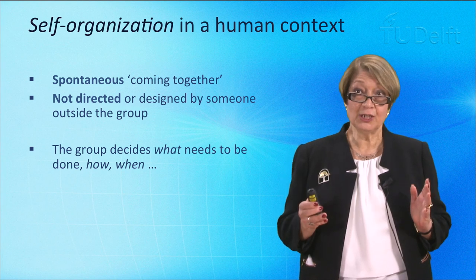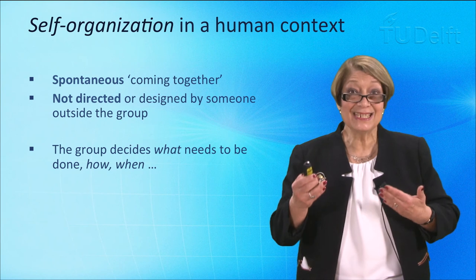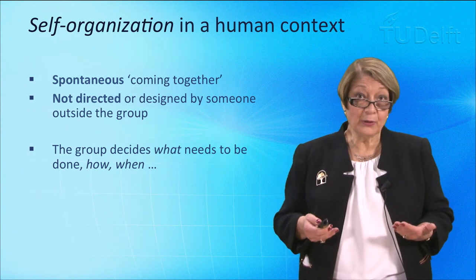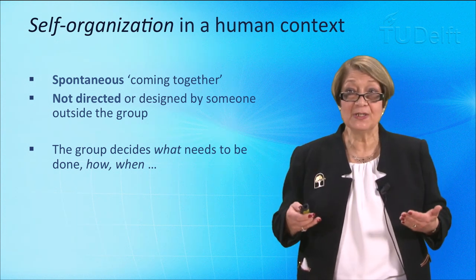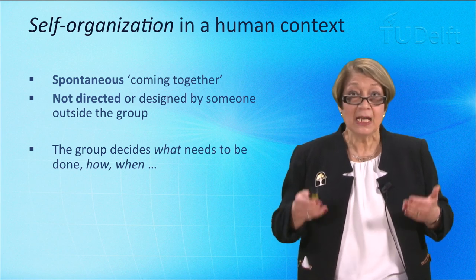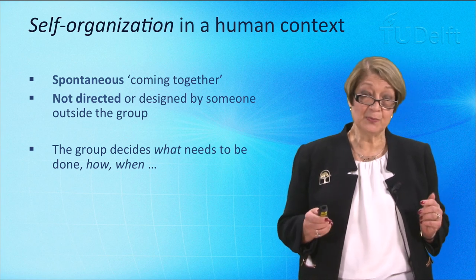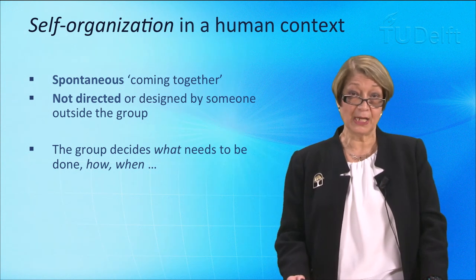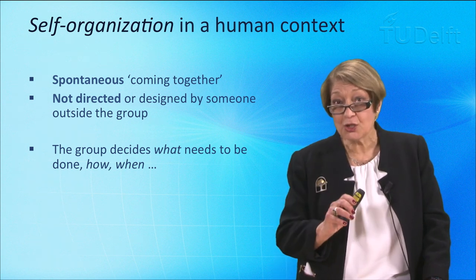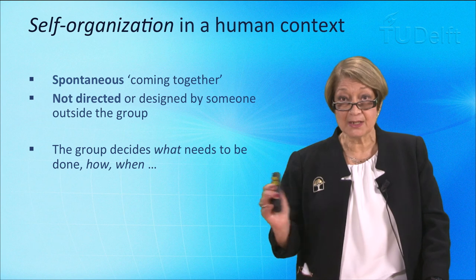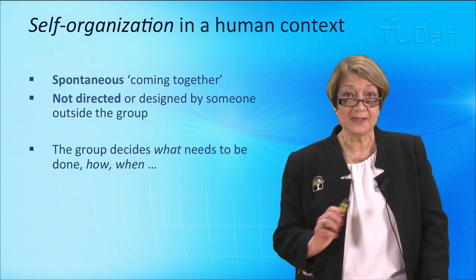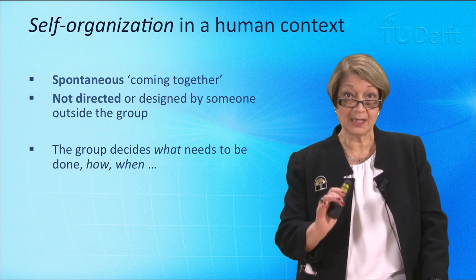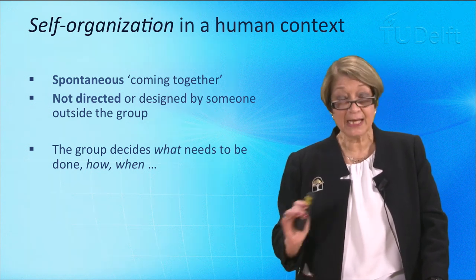Self-organization in a human context is first of all something which is spontaneous — a coming together that has not been pre-thought and is not directed or designed by someone outside the group. That is very, very important. For example, during the Arab Spring, someone took a broom and went to Tahrir Square and started cleaning up simply because the square needed cleaning. No one told that person. When one person started, others joined. That was pure self-organization — spontaneous, a job that needed doing, not directed by anyone outside.